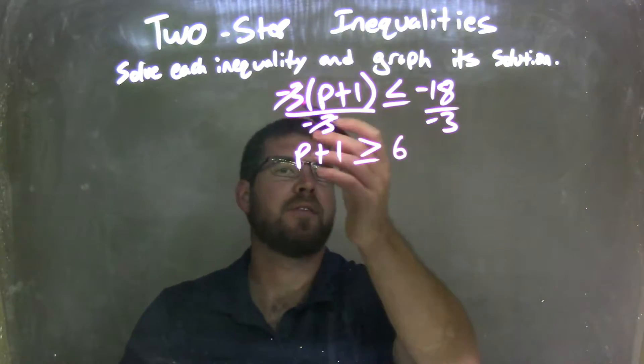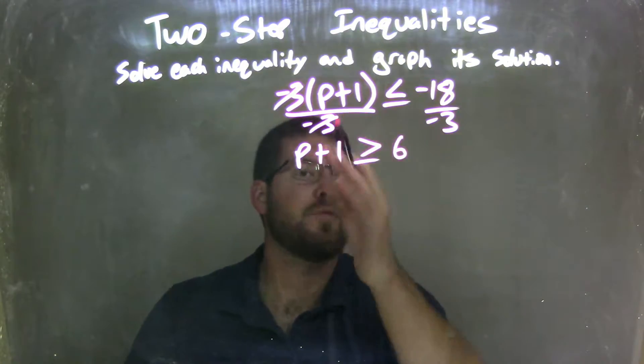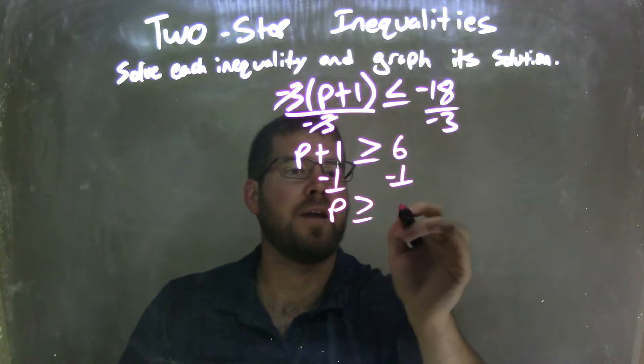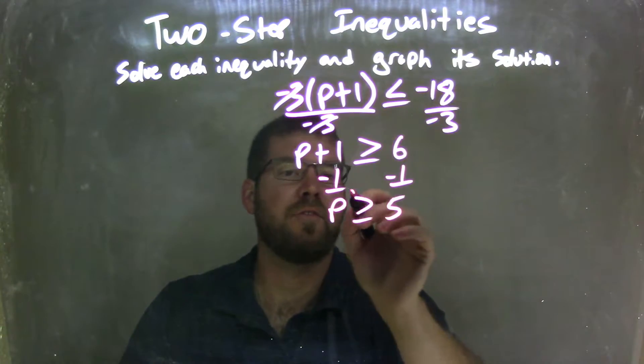So because we divided by negative 3 over the inequality, we flipped it. And then I need to subtract 1 from both sides, leaving me with p is greater than or equal to positive 5, 6 minus 1.